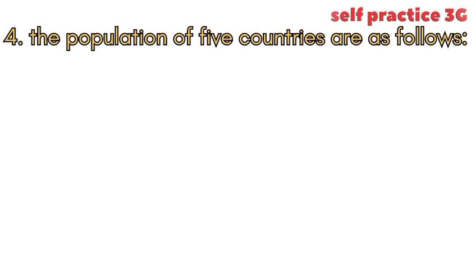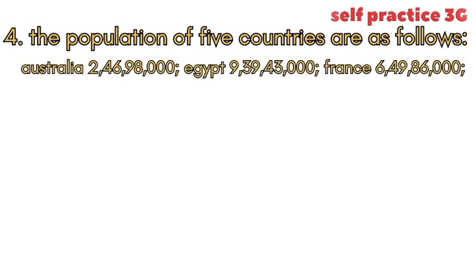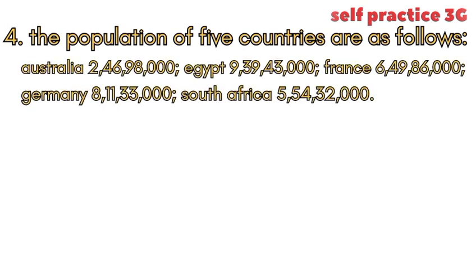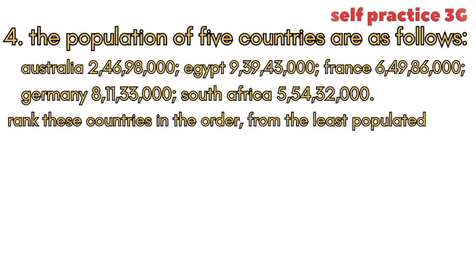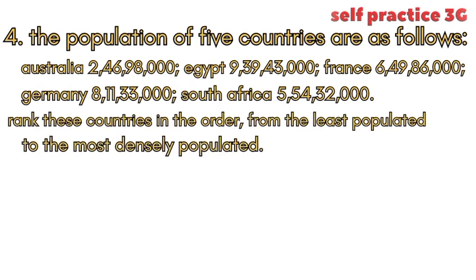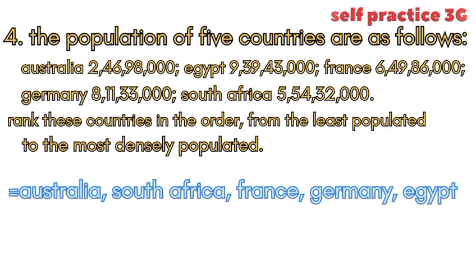Question 4: The population of five countries are as follows — Australia, Egypt, France, Germany, and South Africa. Rank these countries in order. My answer: the first is Australia, South Africa, France, Germany, Egypt.